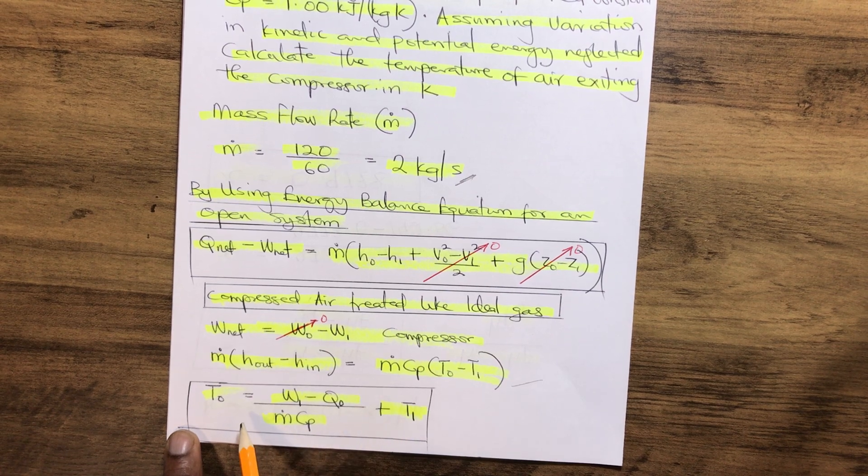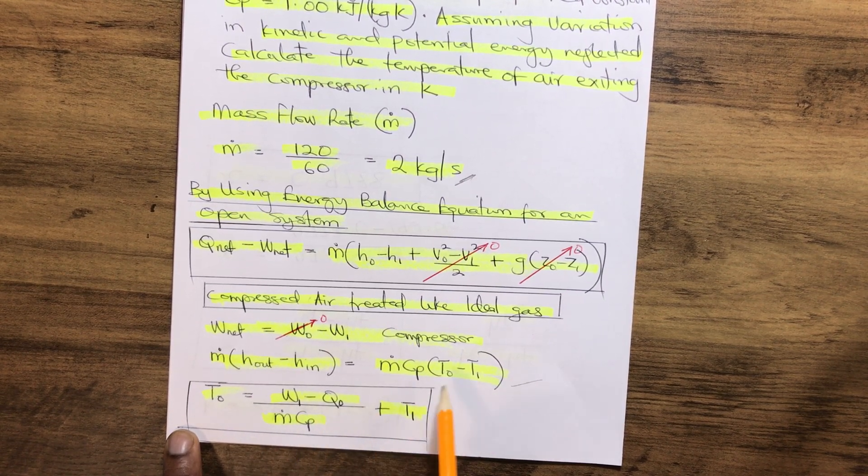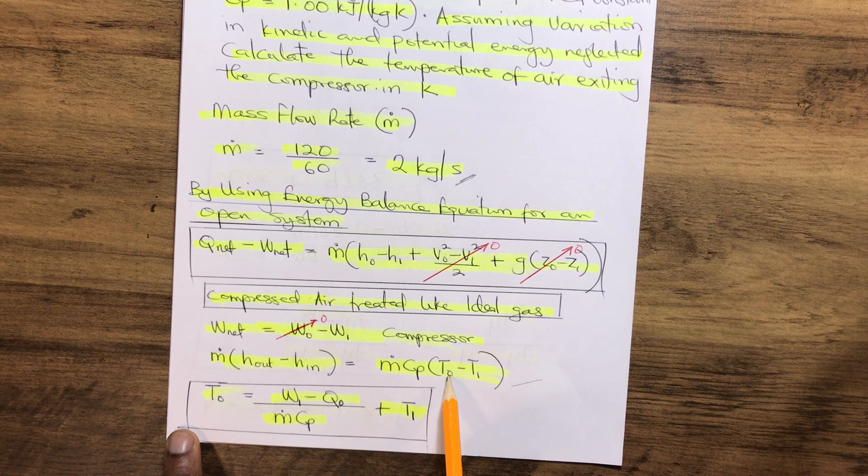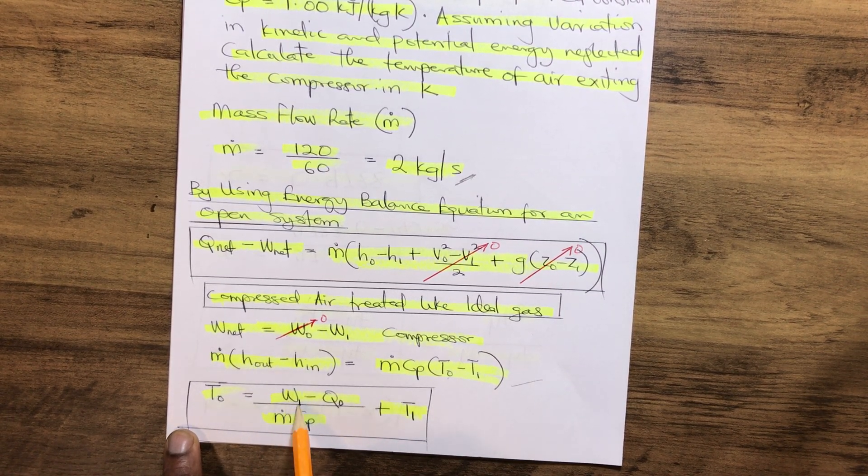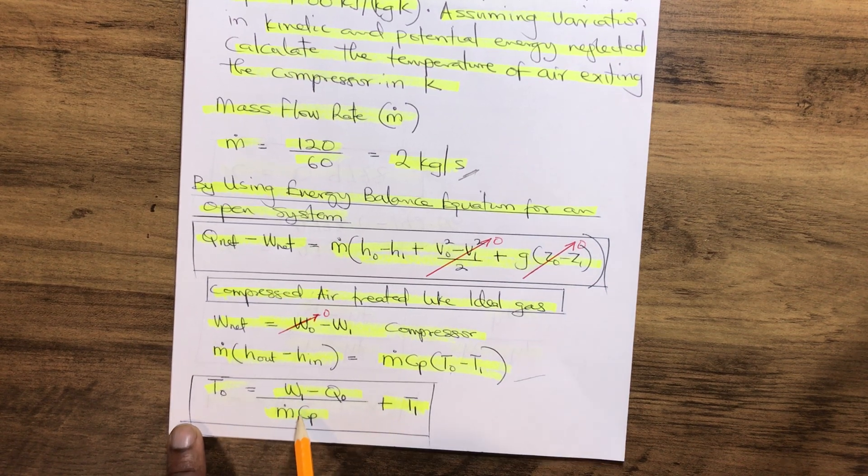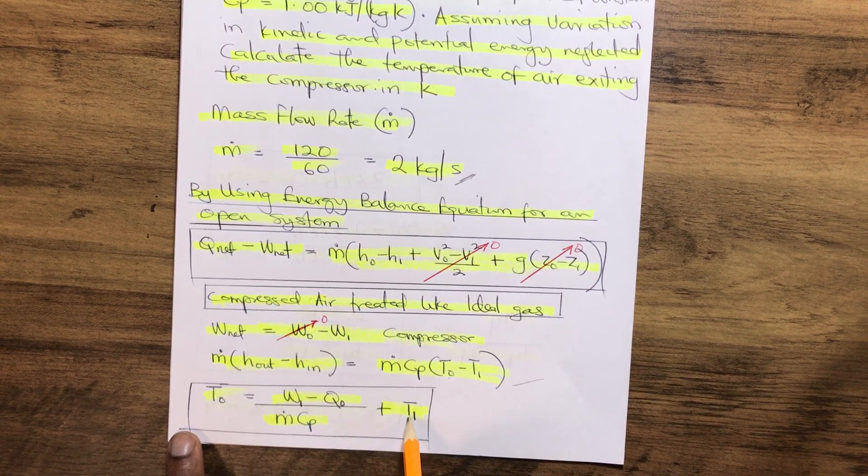So therefore we can resolve the equation to find the outside temperature which is T0. So our T0 becomes W minus Q0 over m Cp plus T1.